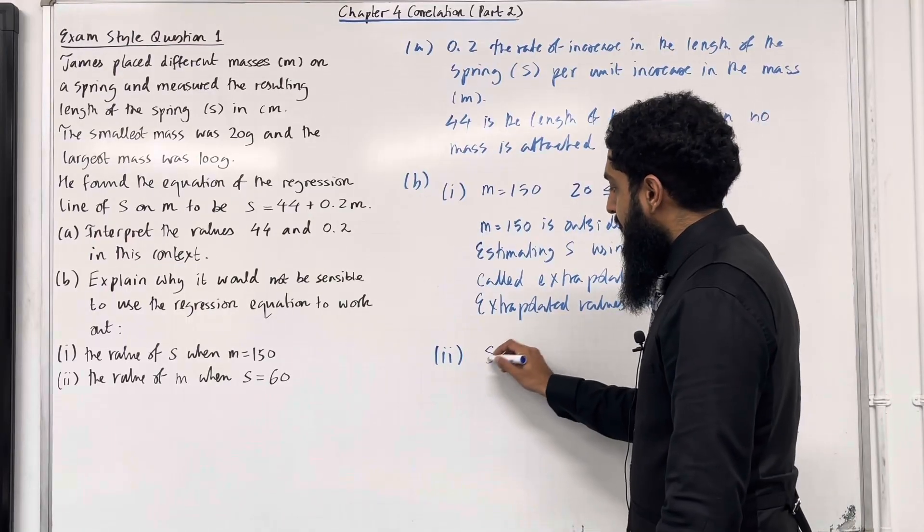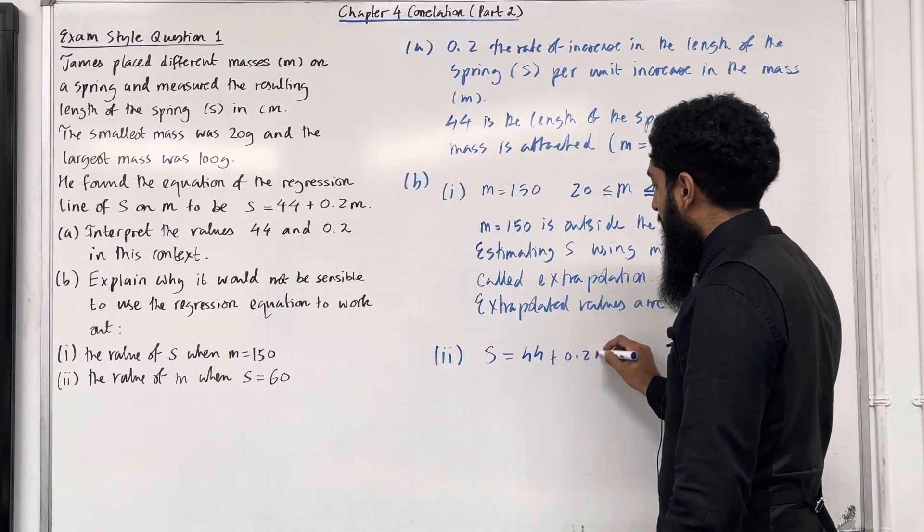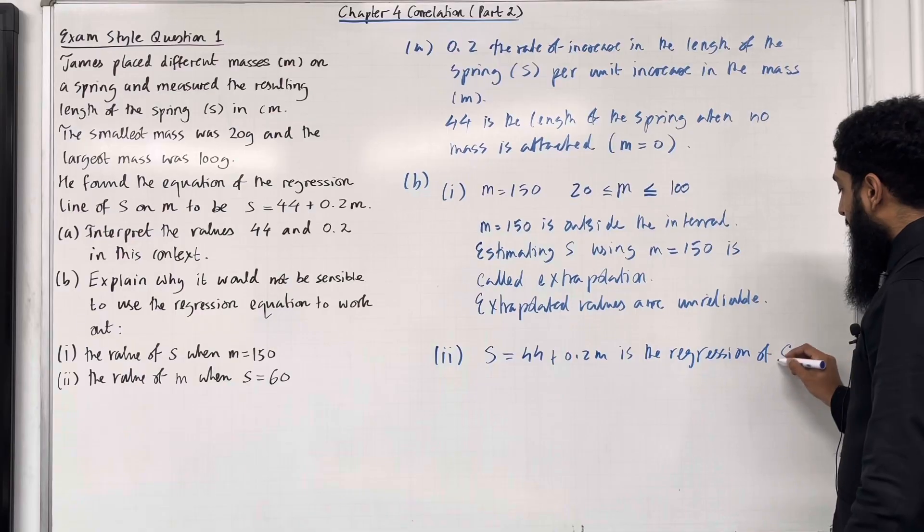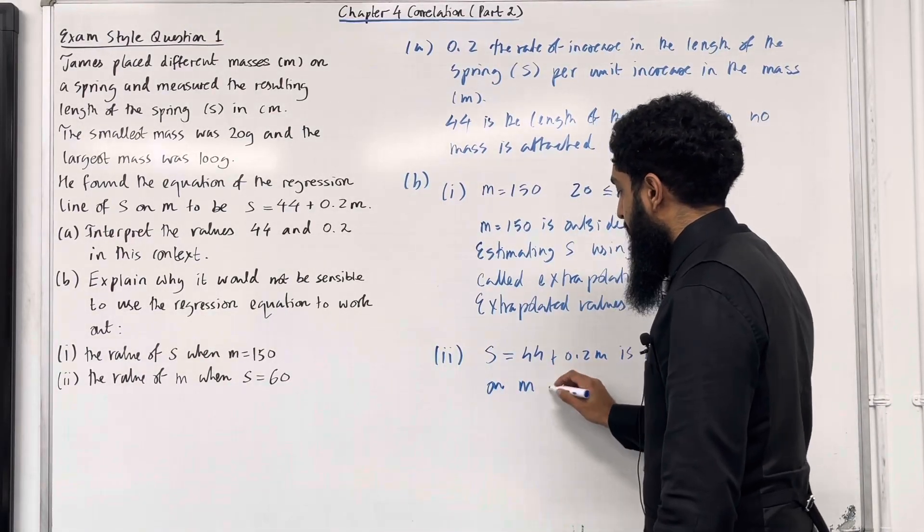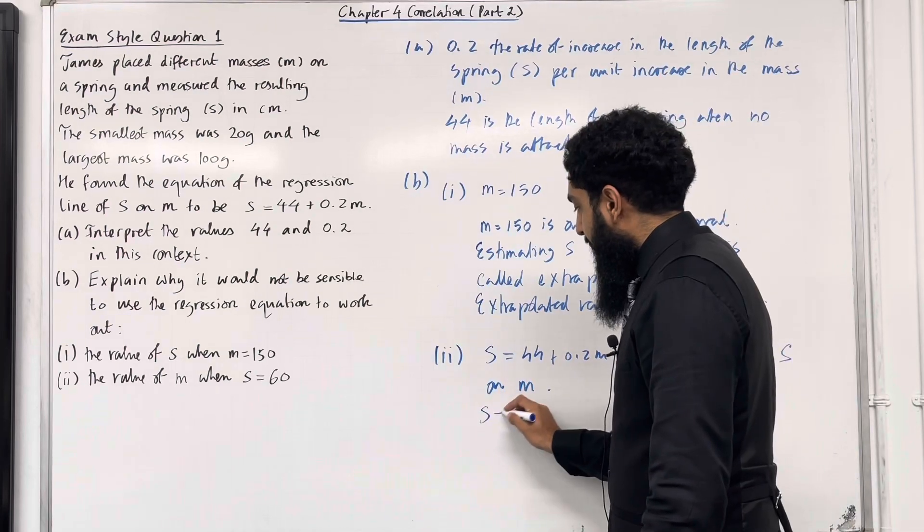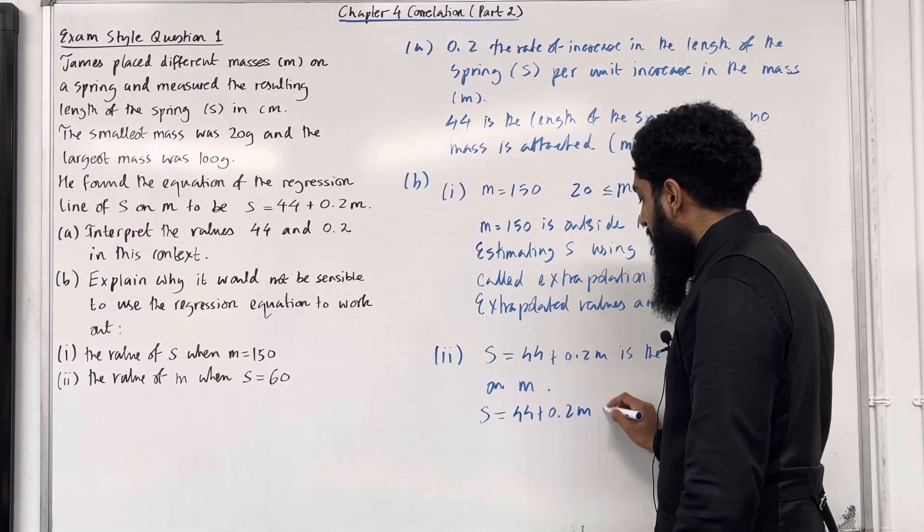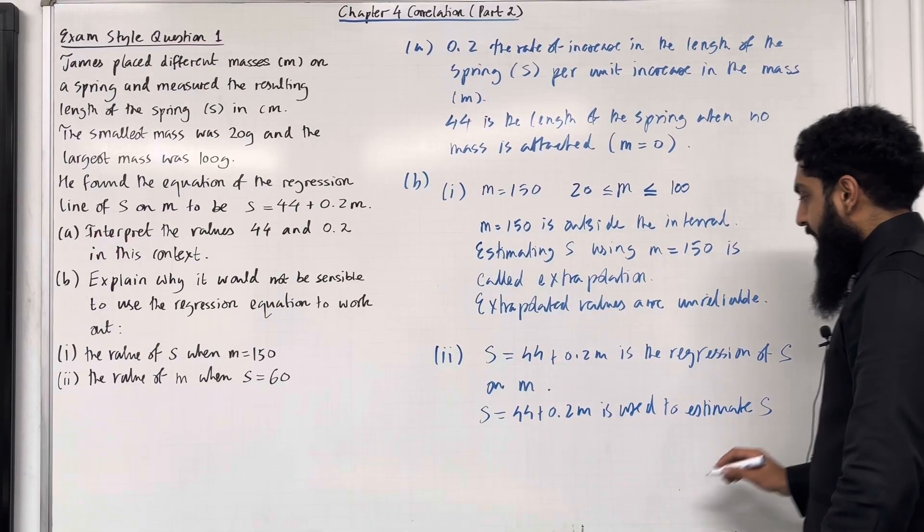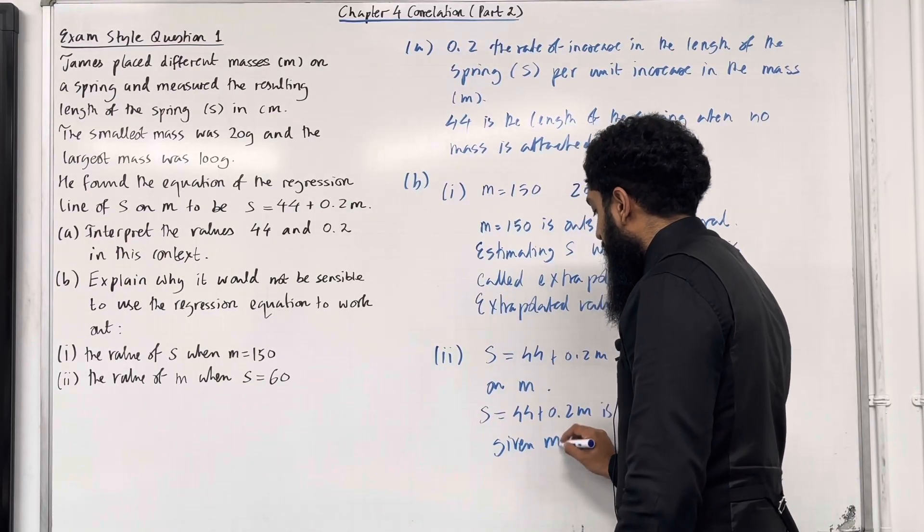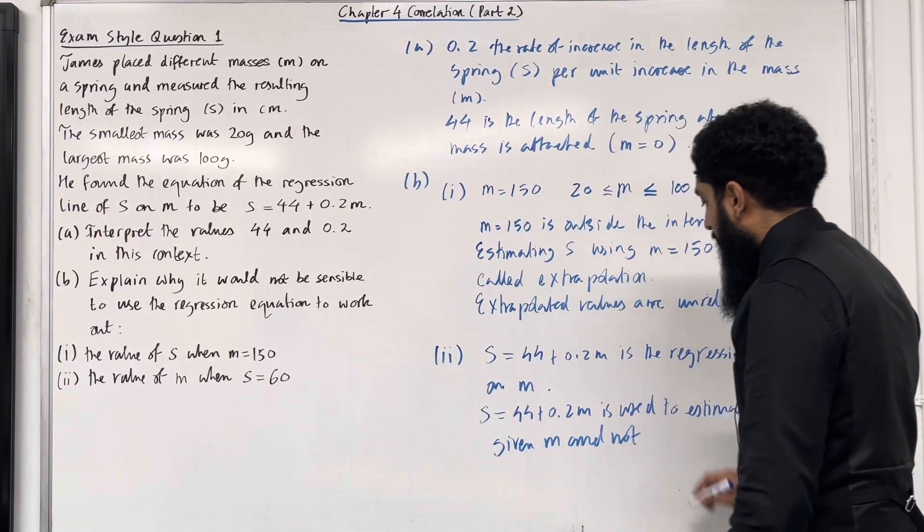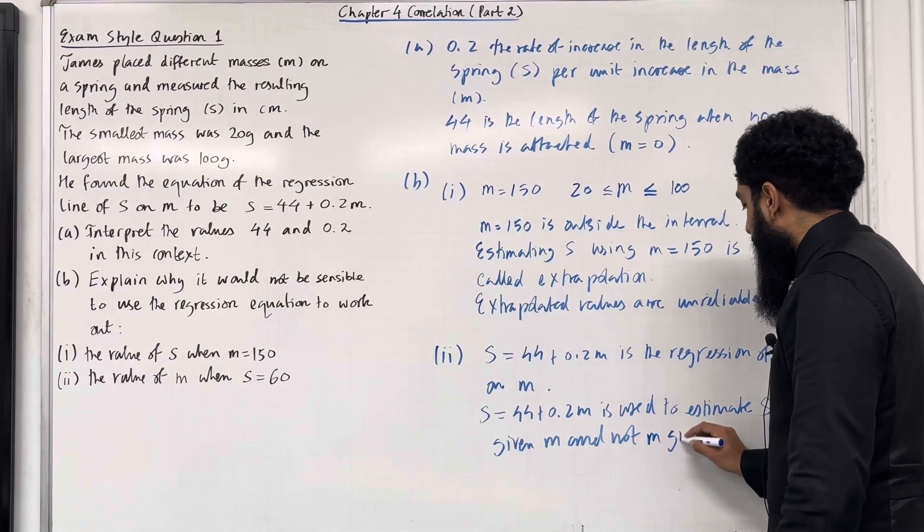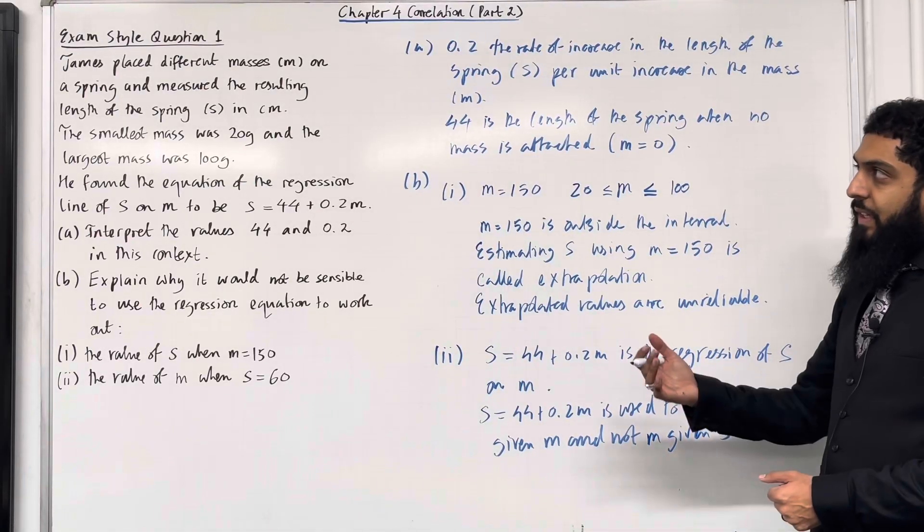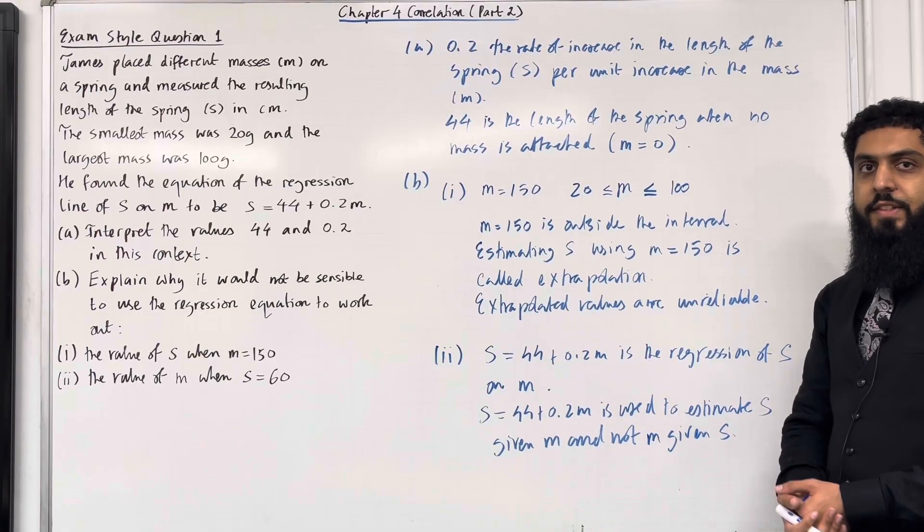What we have is that s = 44 + 0.2m is the regression of s on m. So s = 44 + 0.2m is used to estimate s given m and not m given s. So that completes part B, part 2 of exam style question 1, and overall, this exam style question.